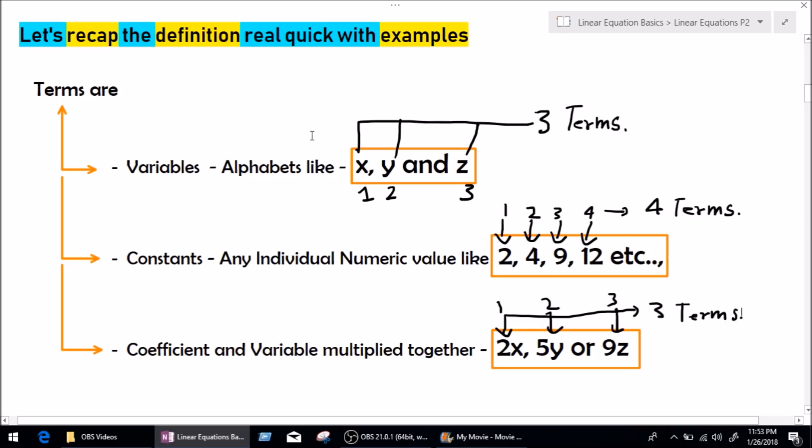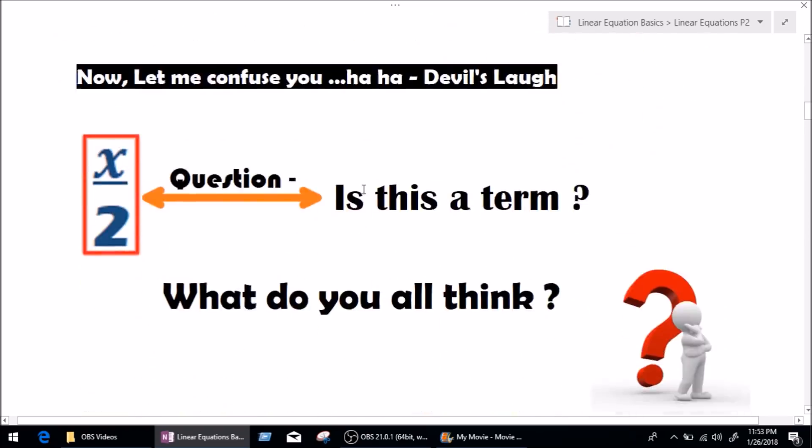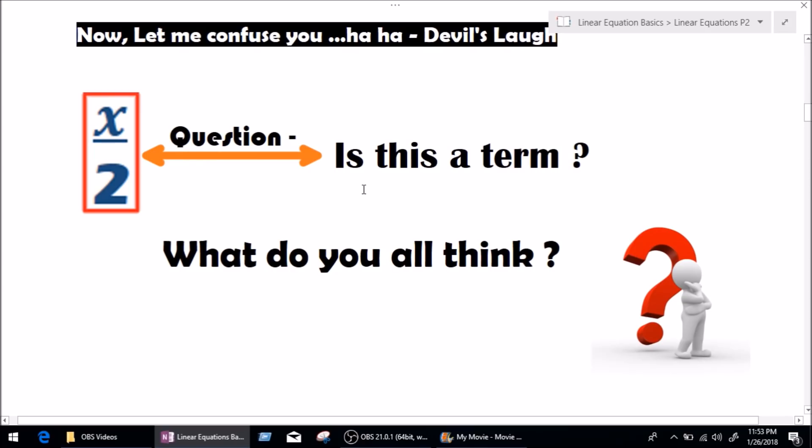Simple. Terms are what? Variables, constant, and coefficient and variable multiplied together. Simple. Okay, now it's time to confuse you.